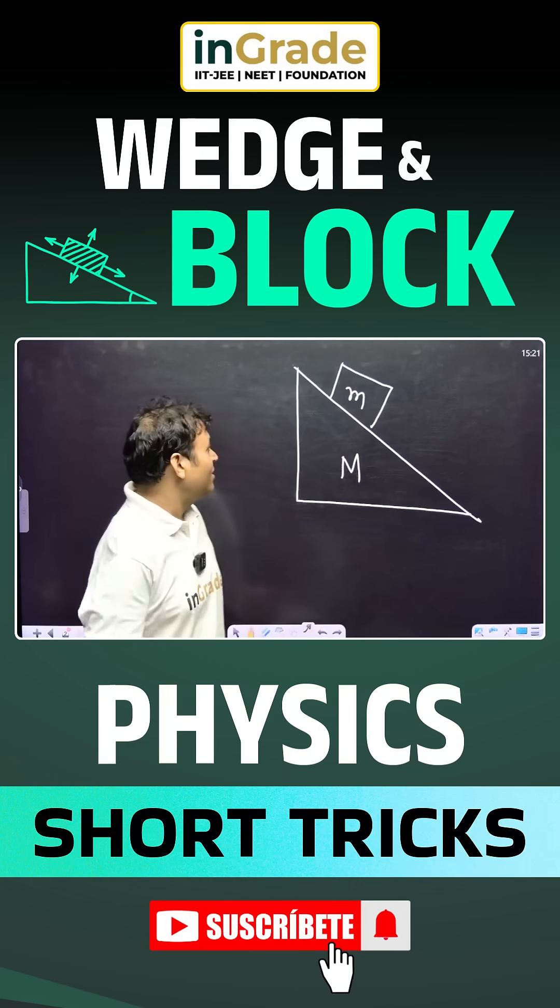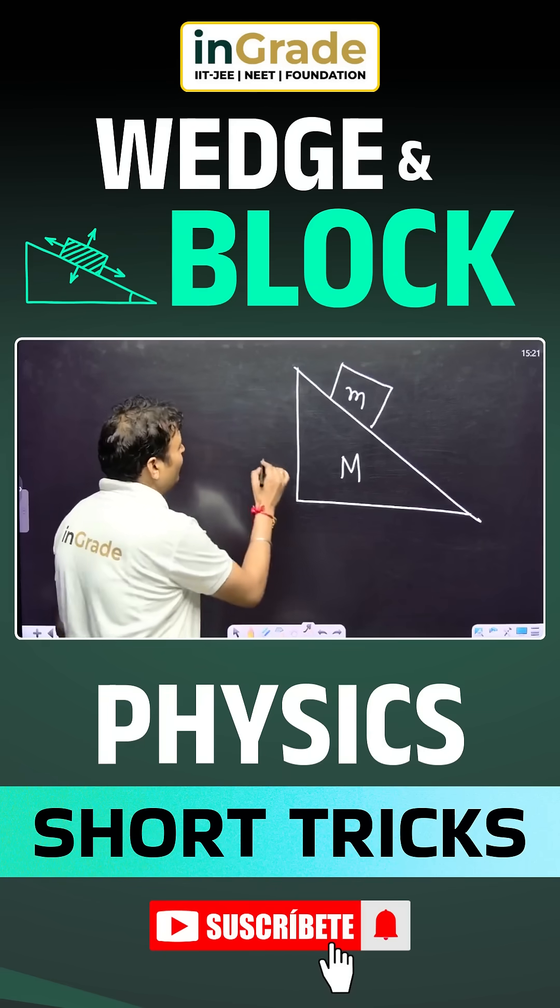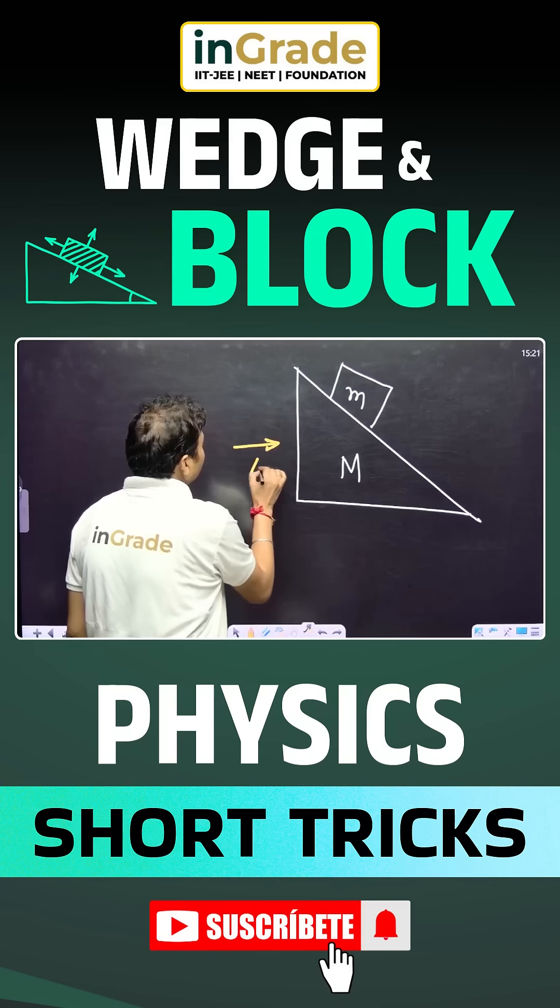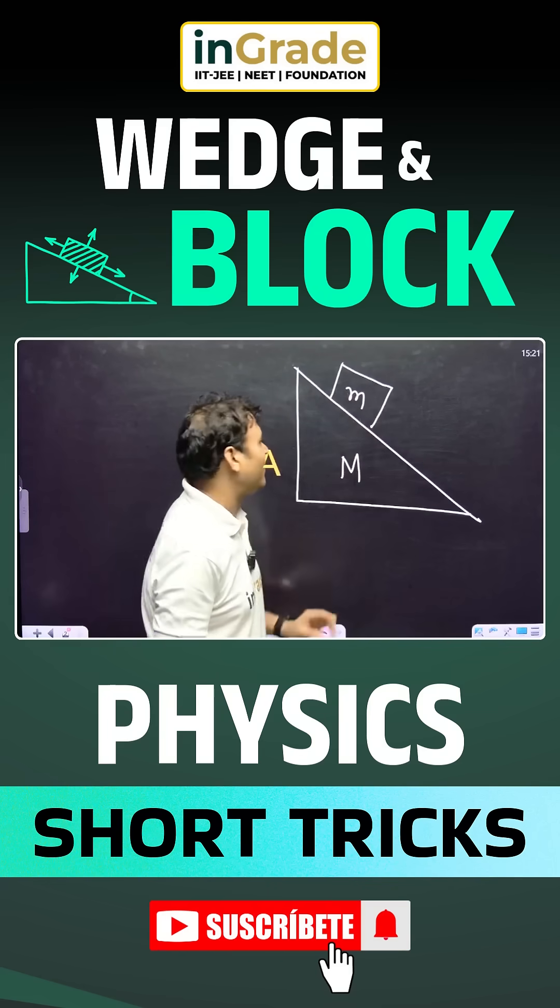Let us solve this question in one minute. What should be the acceleration given to the wedge so that the block should not move relative to the wedge?